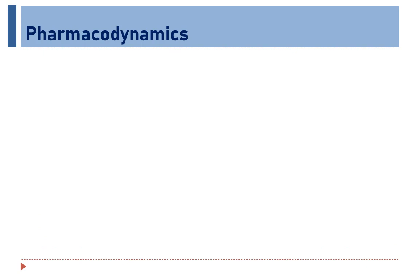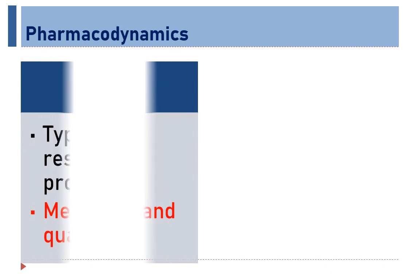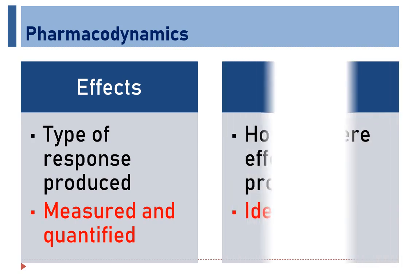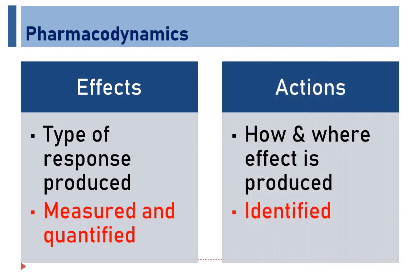Effects of a drug are only quantitative but never qualitative. That means the drug can accelerate or depress the normal physiological or biochemical functions of an organ but cannot produce entirely a new activity. The type of response produced by the drug is called its effect and where the effect is produced is called its action. Therefore, effects are measured and quantified while actions are identified.